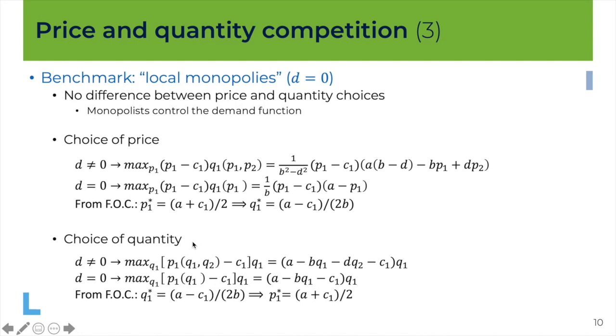Now redo the analysis the profit maximization of the firm when it chooses its quantity. Then we start from this program here coming from the previous slide. Set d is equal to zero in this function here. You see that there is no longer any dependency on q2 which is the sign that we have a monopoly. And again solve the first order condition you should find that q1 star so the quantity that maximizes profit is a minus c1 divided by 2b and if you replace this value here in the demand function, sorry the inverse demand function,